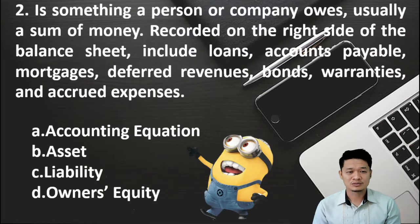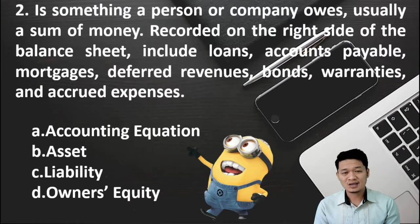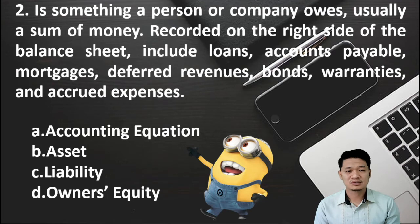For number 2: Is something a person or company owes, usually a sum of money recorded on the right side of the balance sheet. Includes loans, accounts payable, mortgage, deferred revenues, bonds, warranties, and accrued expenses. Is it A, accounting equation? B, asset? C, liability? Or D, owner's equity?